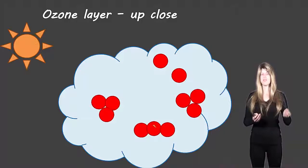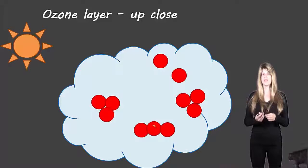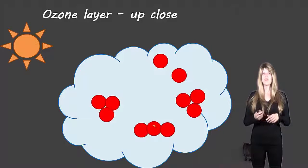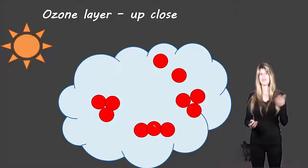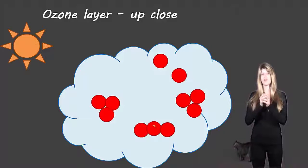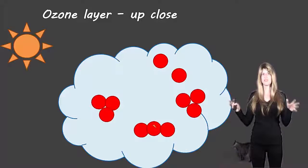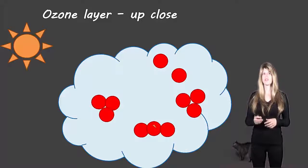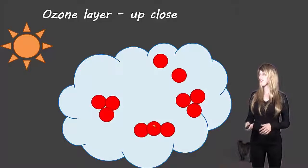So each of those times that UV light is coming and hitting one of these ozone molecules, that would normally be coming through to earth. But because it hits ozone and ozone uses that energy to split itself up, that energy is dissipated and it no longer comes to earth. So that's how it's protecting us.